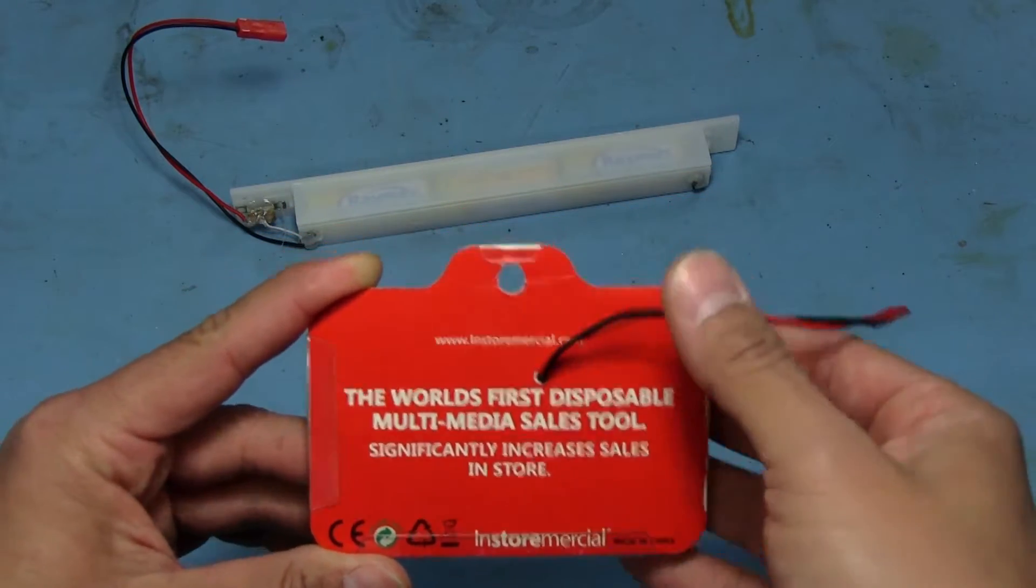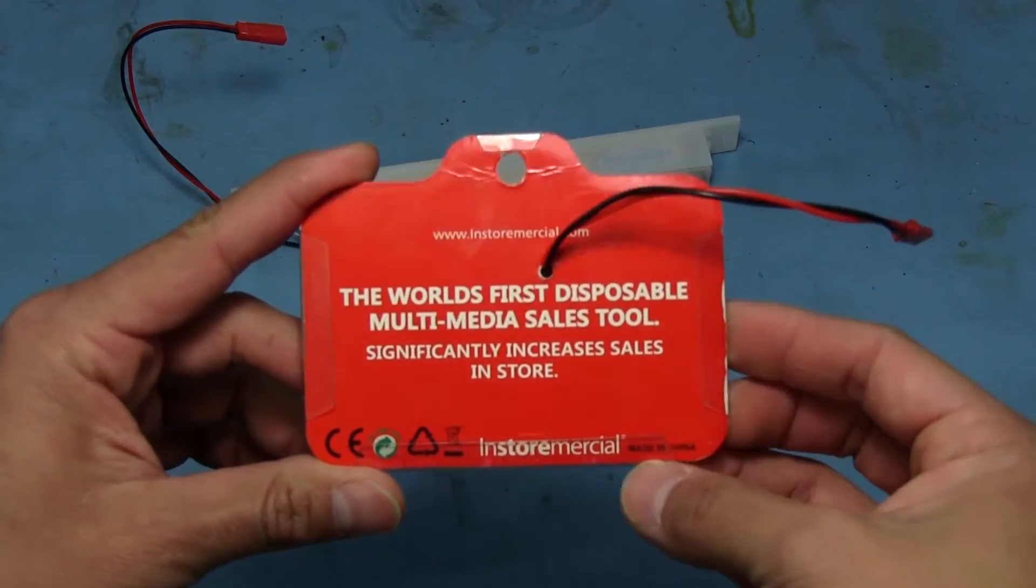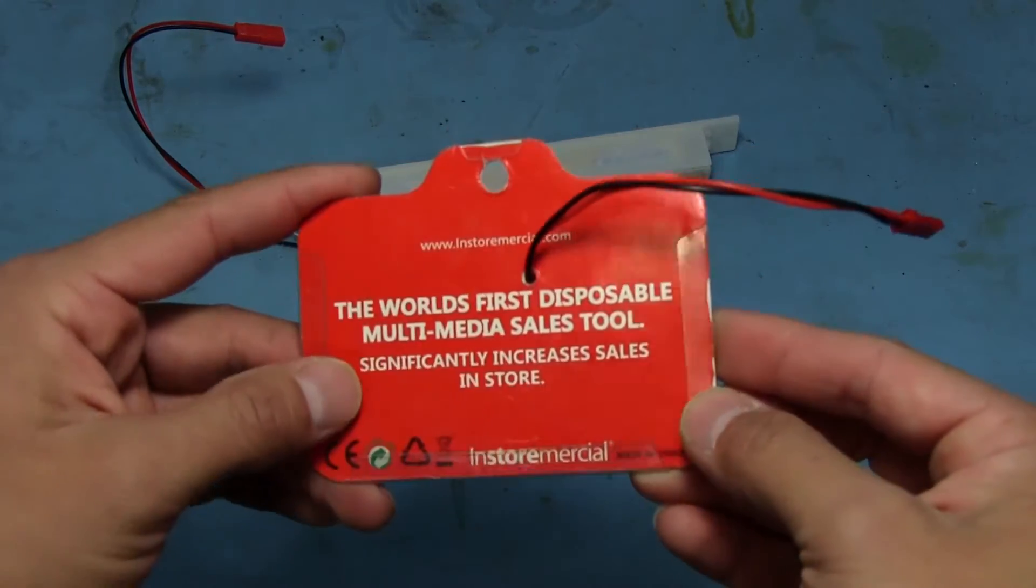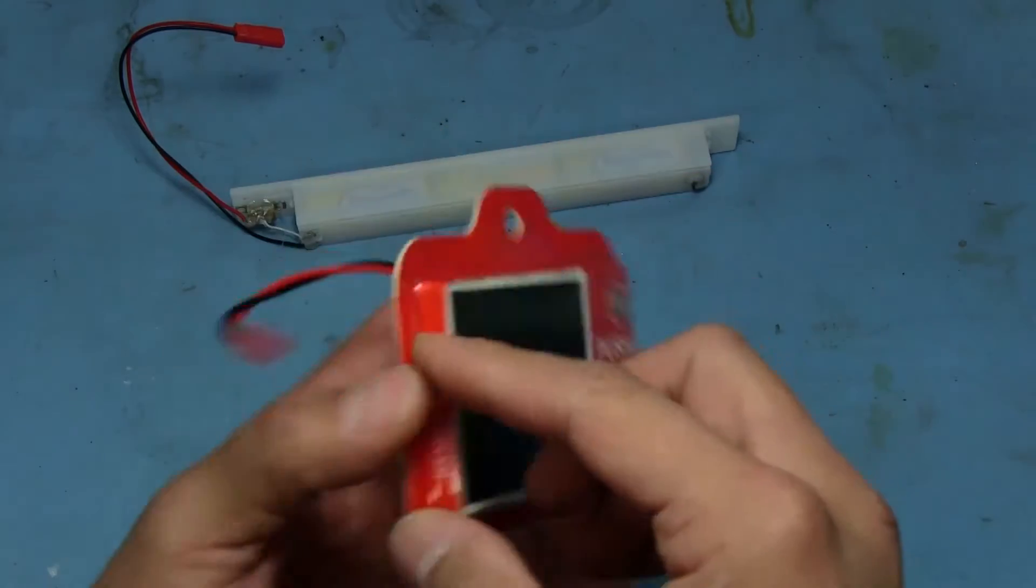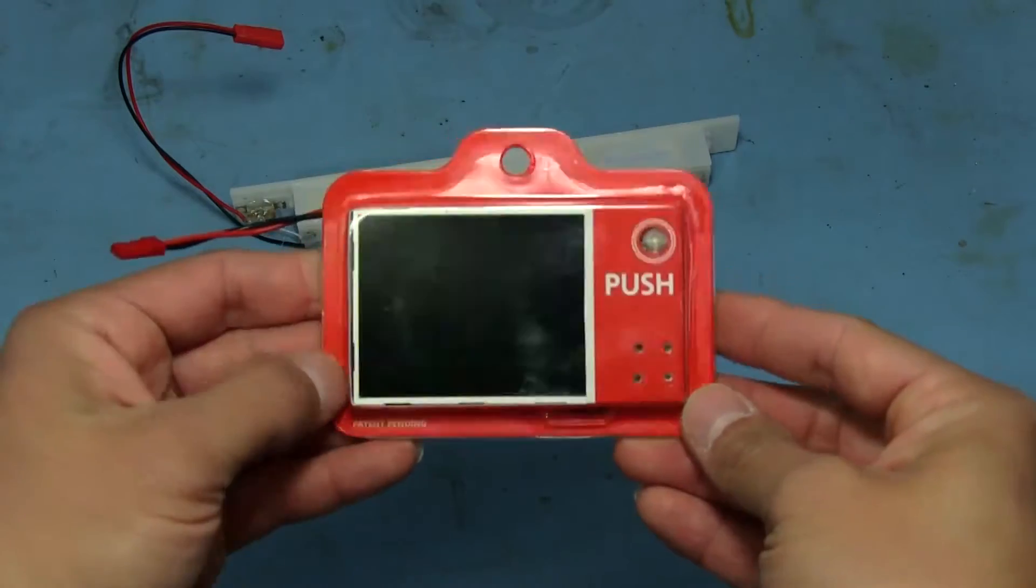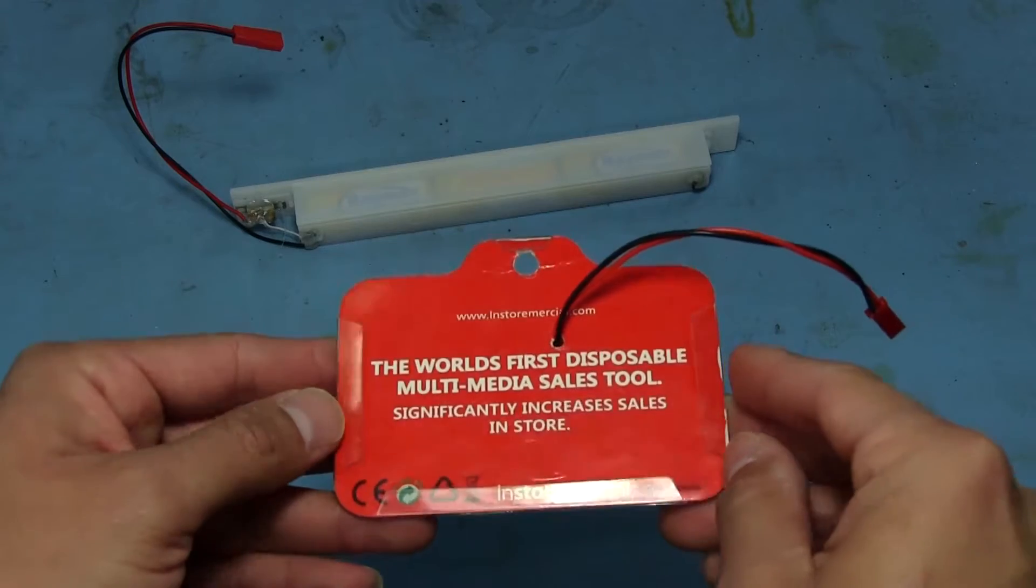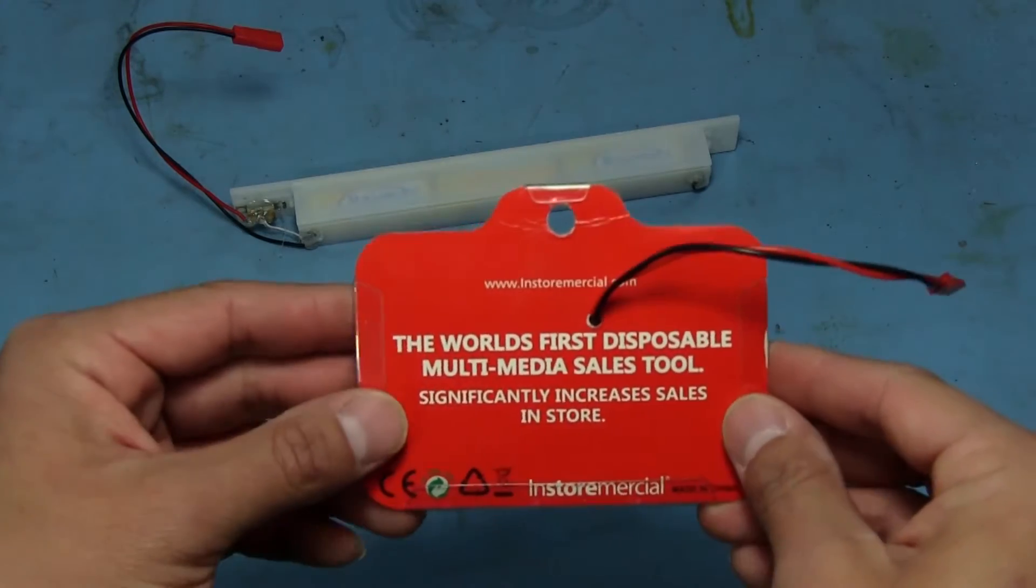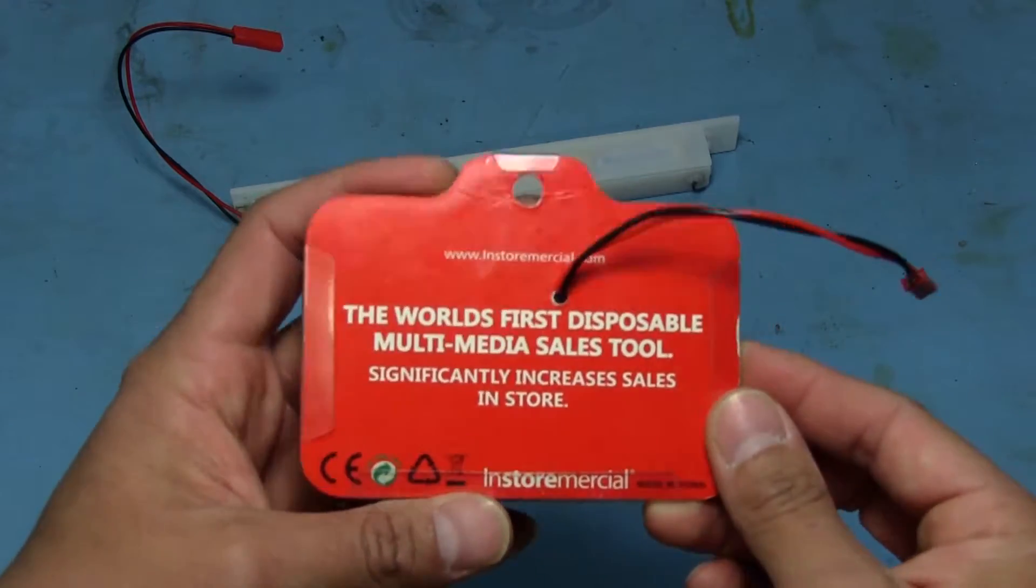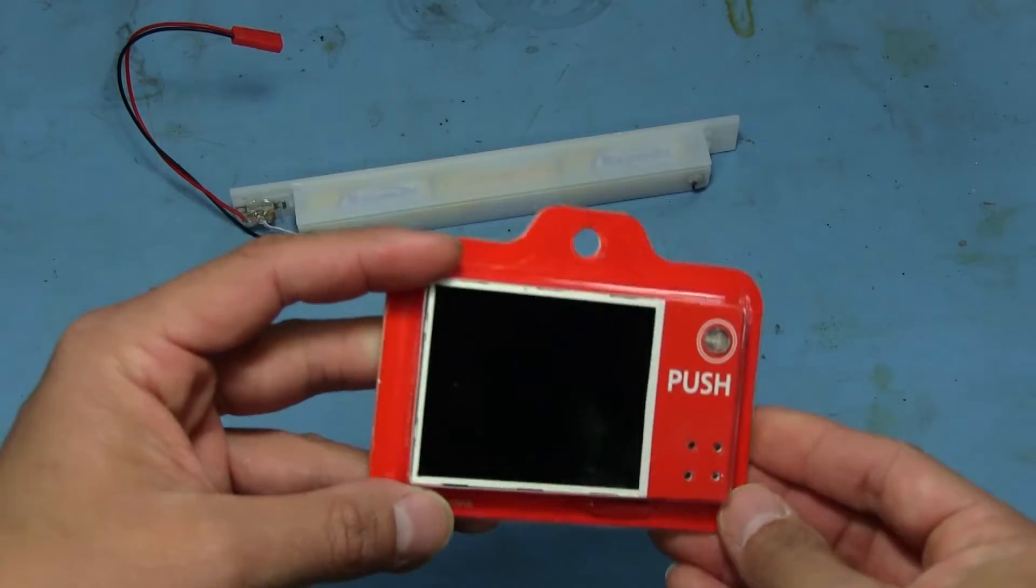In the back, got two wires coming in. Oh, and there's a connector here to separate the battery from this thing. And the world's first disposable multimedia sales tool. I don't know how to feel about the whole disposable thing, but whatever. Not a whole lot, made in China. The plastics just kind of glued onto that cardboard backing there.